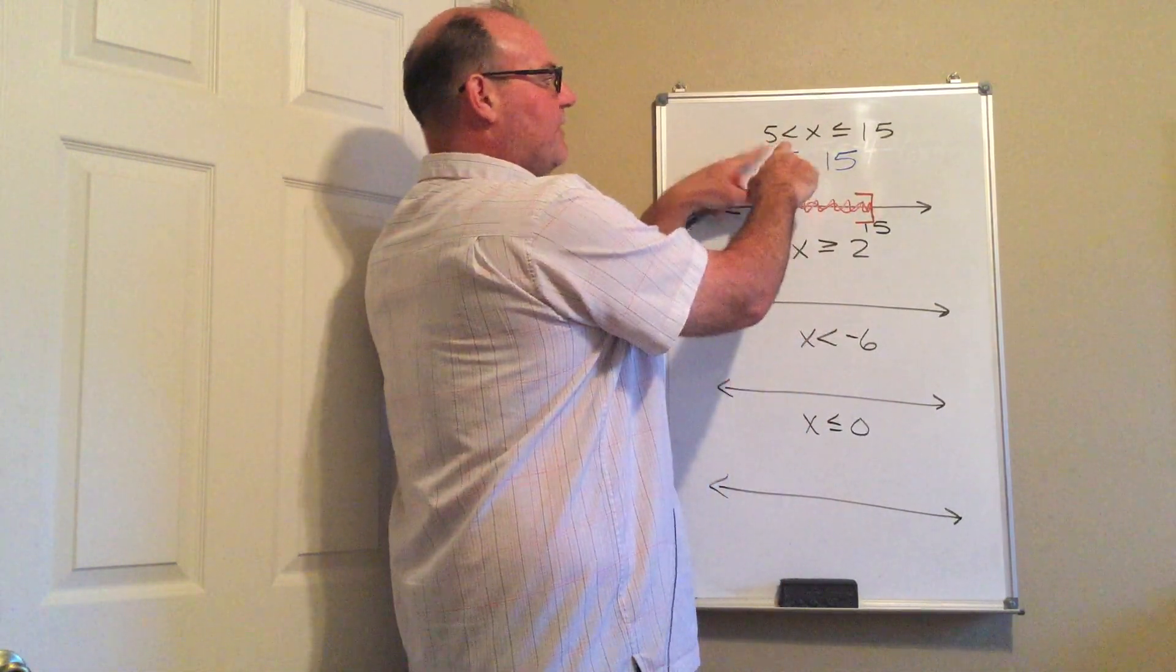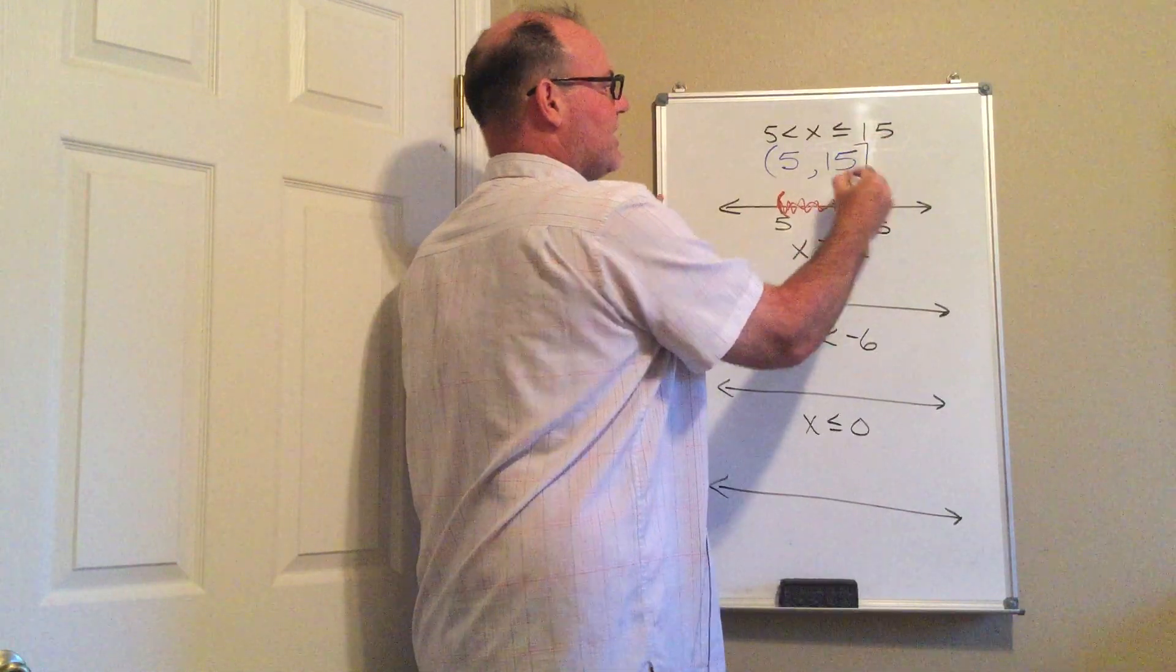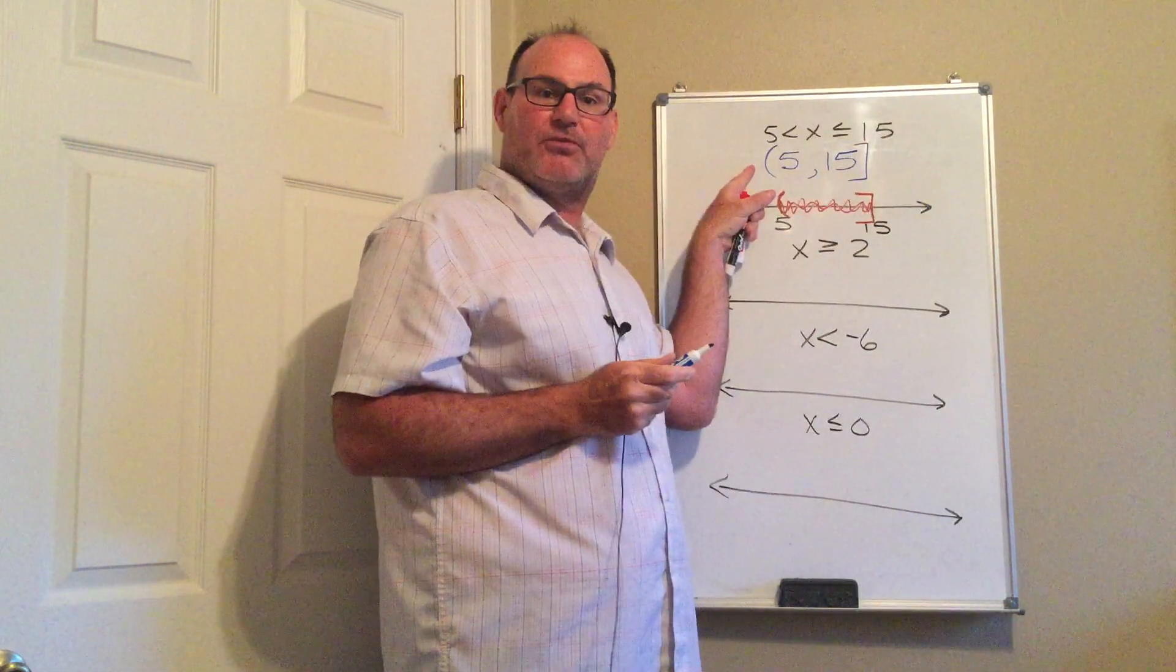At the end without the equals, you put a parenthesis. At the end with the equals, you put a bracket. This is interval notation.